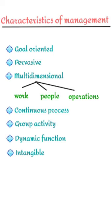The third feature of management is that it is multi-dimensional. Management is a complex process with nearly three dimensions: management of work, management of people, and management of operations. Management of operations is interlinked with both management of work and management of people. Managers have to perform various functions such as planning, organizing, staffing, directing, controlling, and coordinating. Since managers pass through a series of functions continuously, management is also called a continuous process.